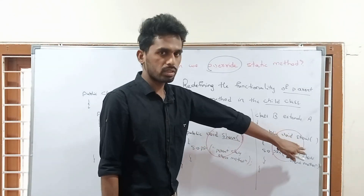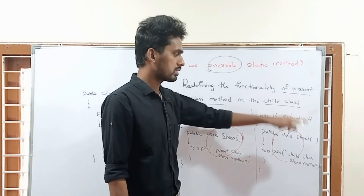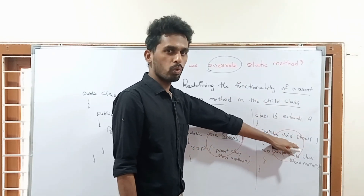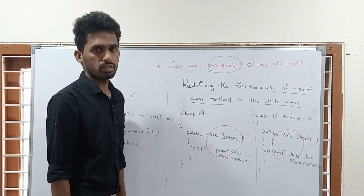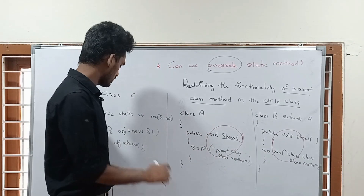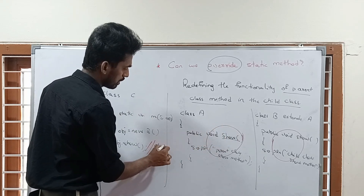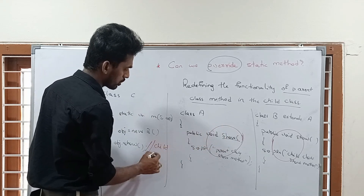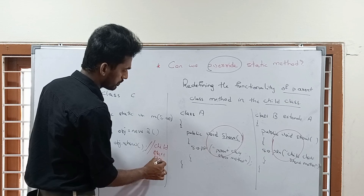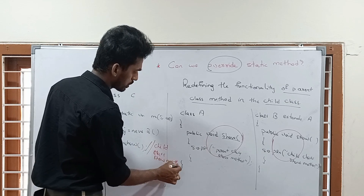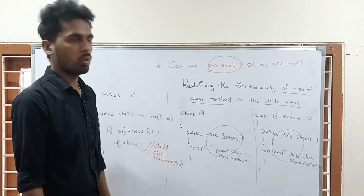Overriding means one method will overtake another method. Here, the child class show method is overtaking the parent class show method. So the output will be 'child class show method'. This concept is nothing but overriding - the child class method overrides the parent class show method.